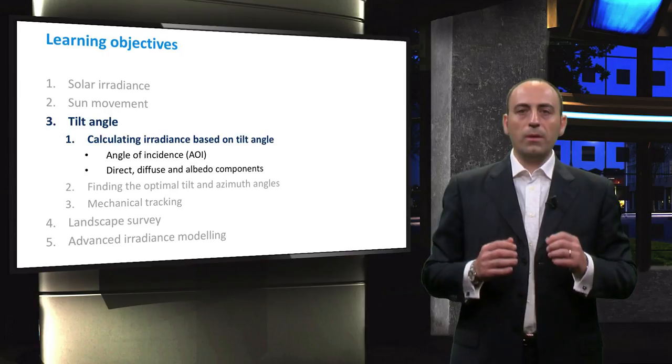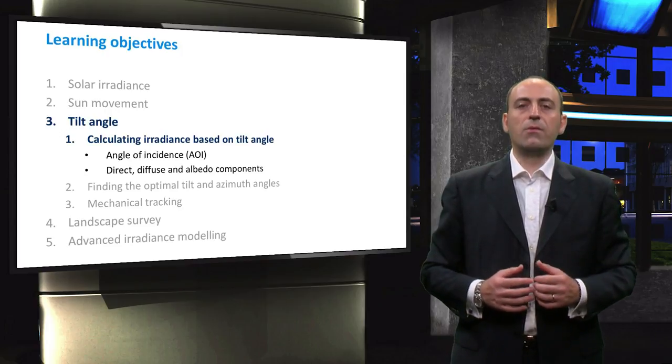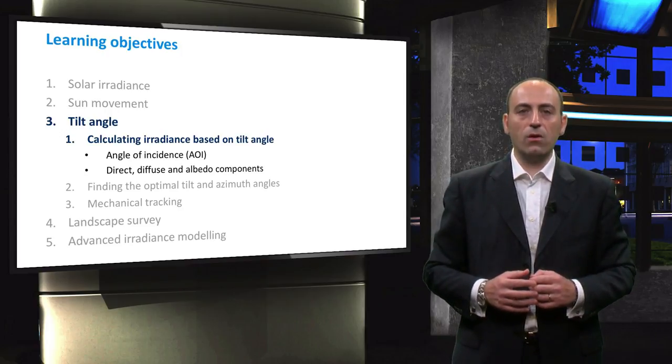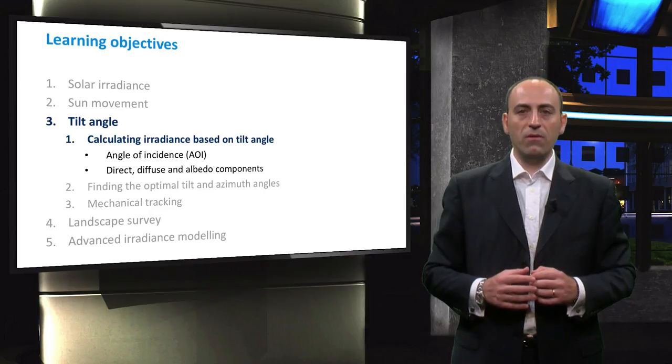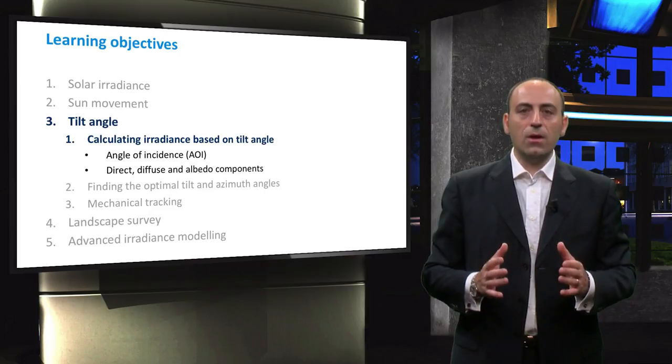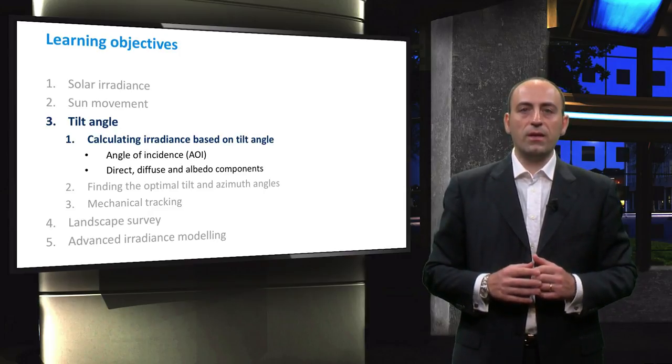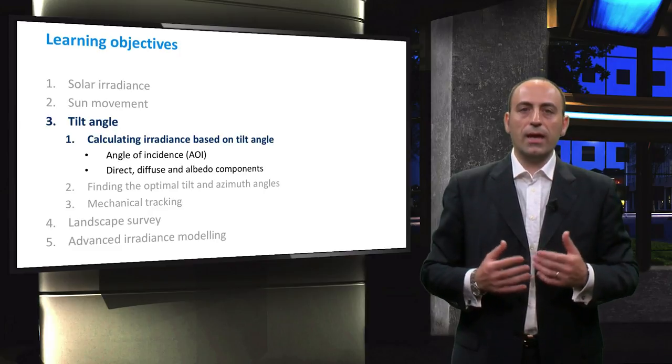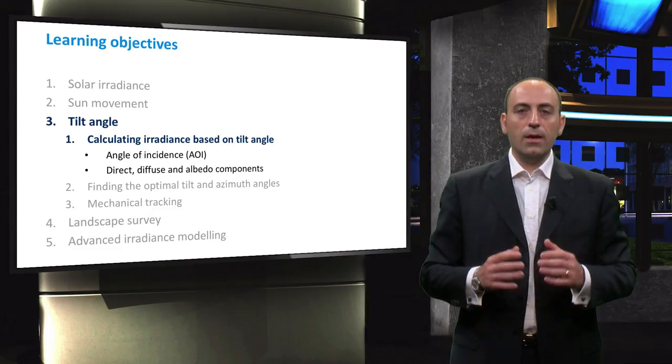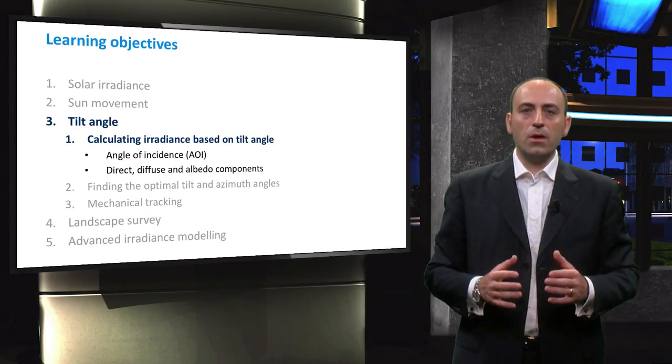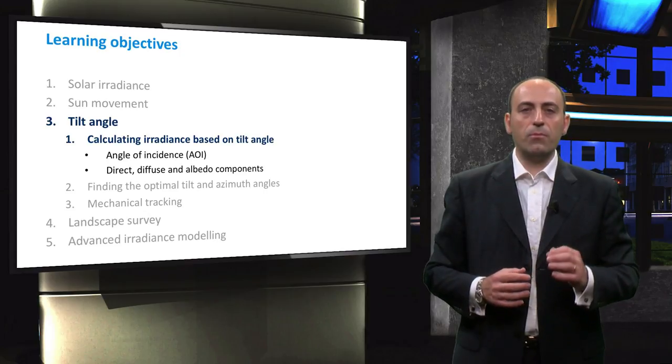In this video, we will give you the tools to calculate the irradiance as a function of the tilt angle and the azimuth angle of the PV module. To that end, we will first divide the incoming irradiance in direct, diffuse and albedo components. In order to calculate these components, we first have to introduce a very important parameter, which is the angle of incidence.